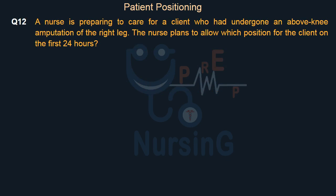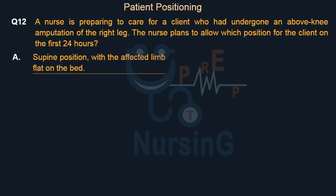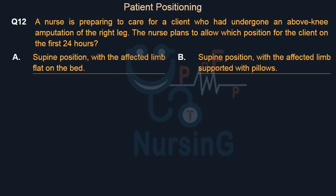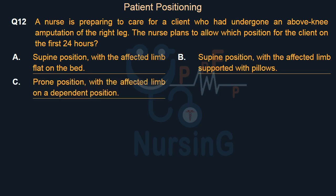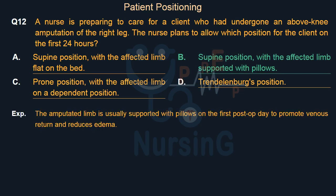A nurse is preparing to care for a client who had undergone an above-knee amputation of the right leg. The nurse plans to allow which position for the client in the first 24 hours? Option A, supine with the affected limb flat on the bed; Option B, supine with the affected limb supported with pillows; Option C, prone with the affected limb in a dependent position; Option D, Trendelenburg's position. The right answer is Option B, supine with the affected limb supported with pillows. The amputated limb is usually supported with pillows on the first post-op day to promote venous return and reduce edema.